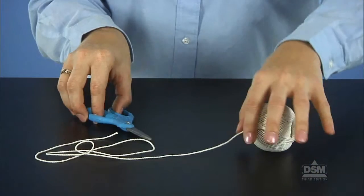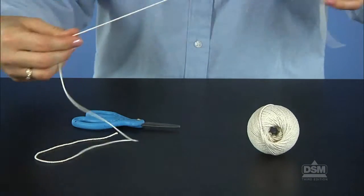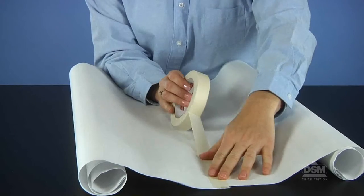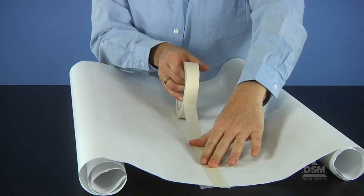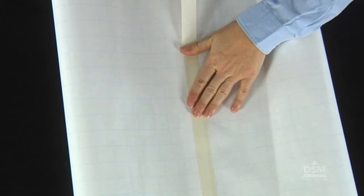Next, cut a piece of string long enough to suspend the foam ring in the middle of the window and tape one end of the string to the foam ring. Then, tape together two long sheets of chart paper to cover the area where sunlight coming in the window will fall during the course of the day.